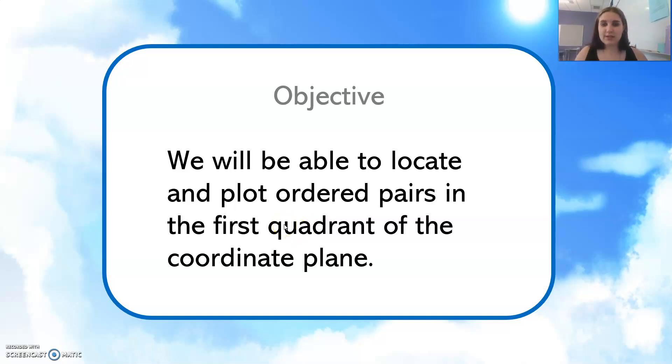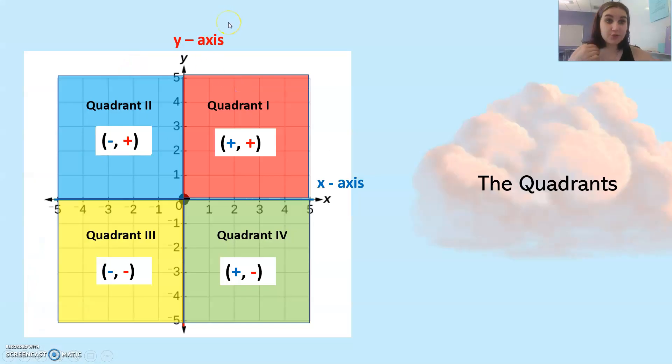So just a quick review of the quadrants of the coordinate plane. There are four of them and they're labeled with Roman numerals 1, 2, 3, and 4.